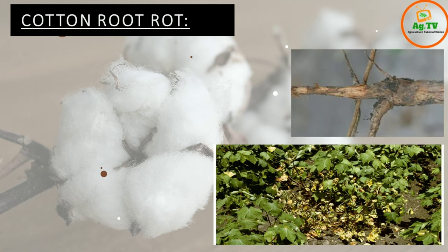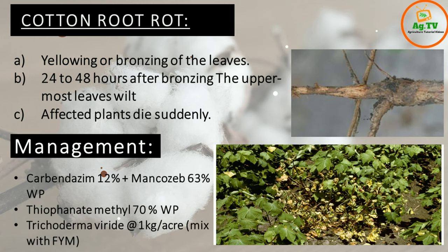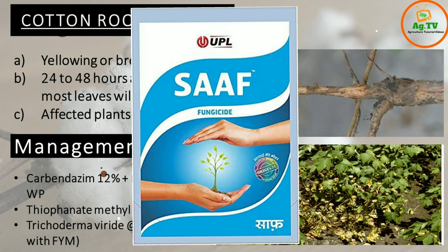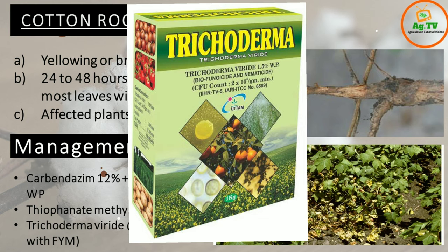Cotton Root Rot is a fungal infection. The plant will turn yellow or bronze color, and within 24-48 hours there will be wilting — the plant will dry out very quickly and suddenly die. For management, you have to use a fungicide: Carbendazim 12% + Mancozeb 63% WP, or Thiophanate-methyl 70% WP. You can also use Trichoderma viride as a biological treatment for fungal infections.